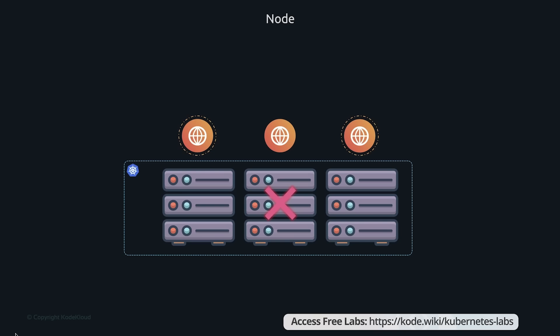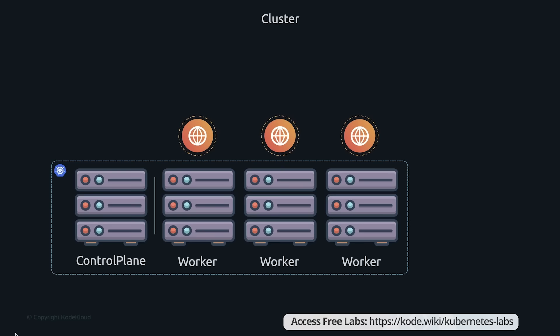Now we have a cluster, but who is responsible for managing it? Where is information about the cluster stored? How are nodes monitored, and when a node fails, how do you move the workload to another worker node? That's where the control plane comes in — also previously known as the master node. The control plane is another node with Kubernetes components installed in it. It watches over the nodes in the cluster and is responsible for the actual orchestration of containers on the worker nodes.